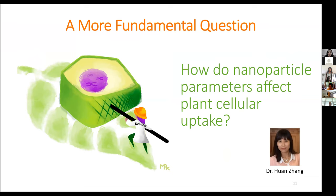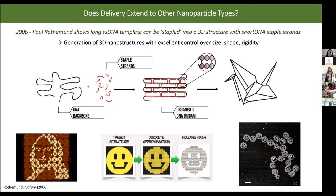A question often asked is how these particles are entering the plant. There are numerous studies on translocation across lipid membranes, but very few on transport across the plant cell wall. A postdoc in my lab, Huan Zhang, has taken on this question using DNA nanostructure or DNA origami nanotechnology. This approach is much more modular than producing organic or inorganic nanoparticles — we can reliably and reproducibly make structures with predefined sizes, shapes, stiffnesses, and compactnesses to assess their role in nanoparticle transport into plant cells.